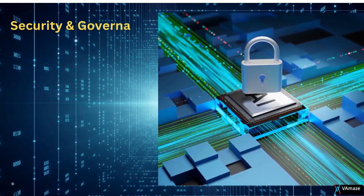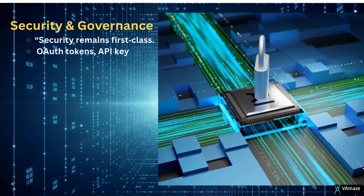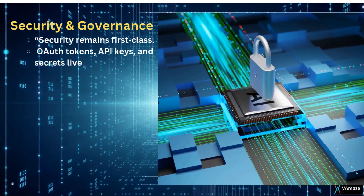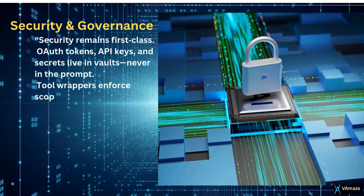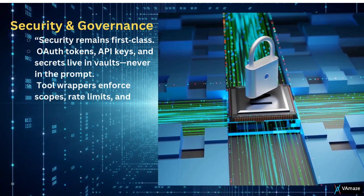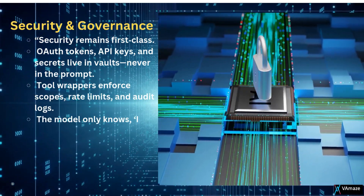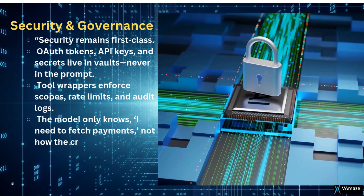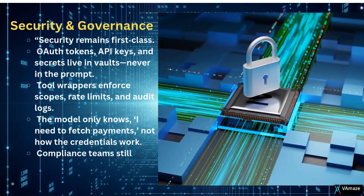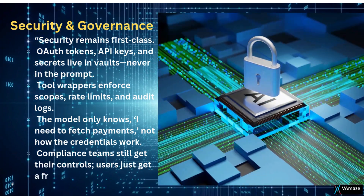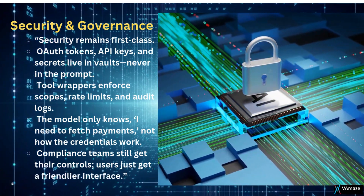Security and governance. Security remains first class. OAuth tokens, API keys, and secrets live in vaults — never in the prompt. Tool wrappers enforce scopes, rate limits, and audit logs. The model only knows 'I need to fetch payments,' not how the credentials work. Compliance teams still get their controls; users just get a friendlier interface.